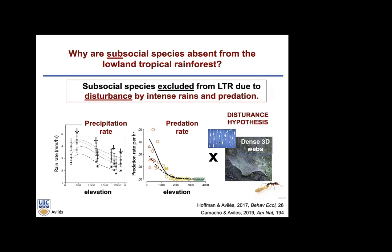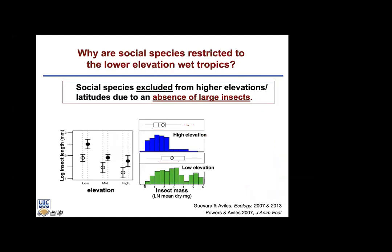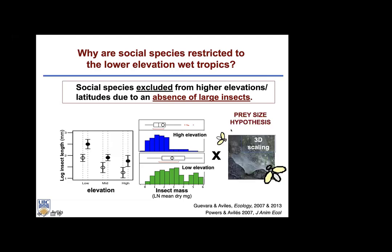If spiders are in a place where webs are frequently damaged by strong rains, they cannot maintain them in good condition unless maintenance is shared by multiple females. Likewise, in areas of high predation, multiple females are better able to look after offspring even if a mother dies. The second pattern to explain is why social species are restricted to the lower-elevation wet tropics — we suggest this is due to an absence of large insects at higher elevations and latitudes. We call this the prey size hypothesis.